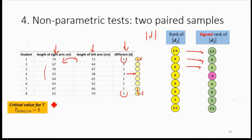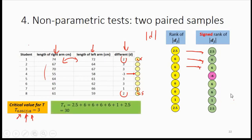The next thing you have to do is find the critical value for T — note this is a capital letter T, not the t-test T. You look it up in a T-table using alpha, the tail, and n. First, sum up all the positive ranks and also sum up all the negative ranks. For example, if the negative ranks sum to 6 and the positive ranks include values like 2.5 and others, you sum all the positive ones to get, say, 30.